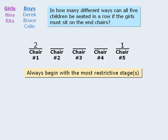We have now seated both girls. Let's move on to the boys. Since we must seat the three boys in the three remaining chairs, each stage is equally restrictive, so it doesn't matter which stage we address next. Let's examine the number of ways we can accomplish seating a boy in chair number two. We have three boys, so there are three ways to accomplish this stage. Once we have seated a boy in chair number two, we have only two boys remaining, so when we move to chair number three, the answer is two ways.